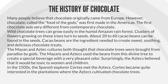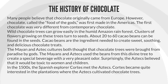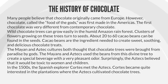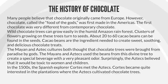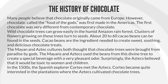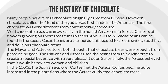The History of Chocolate. Many people believe that chocolate originally came from Europe. However, chocolate, called the food of the gods, was first made in the Americas. The first chocolate was very different from contemporary chocolate. Wild chocolate trees can grow easily in the humid Amazon rainforest. Clusters of flowers growing on these trees turn to seeds. About 20 to 60 cacao beans can be found in the seeds. Cacao beans are the ingredient needed to create sweet, soothing, and delicious chocolate treats. The Mayan and Aztec cultures both thought that chocolate trees were brought from paradise by gods.